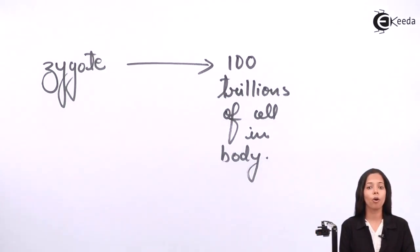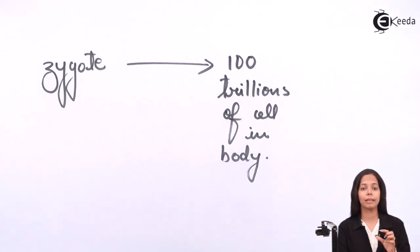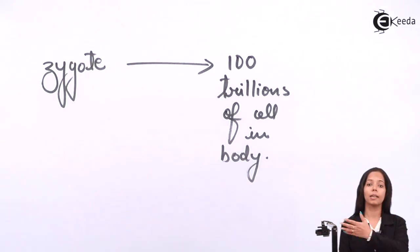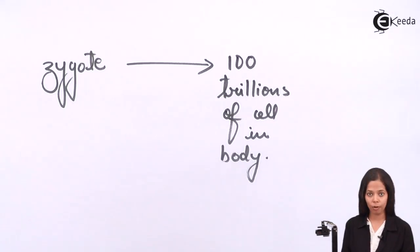Now how is it possible that a single cell, that is zygote, has resulted into formation of a body that contains 100 trillion cells? This is possible because our cells carry out one important process which is called cell division. So today we are going to study how the cell divides in detail.